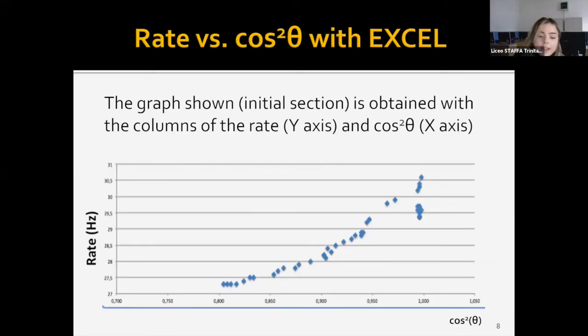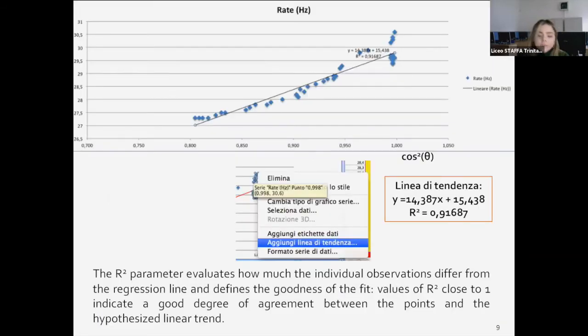In this slide, on the x-axis is represented the cos squared of theta, while on the y-axis is represented the rate of muon flux as a function of the zenith angle. In order to better highlight the points of the graph, we have narrowed the field of action in the scale of the representation of the two measures. In order to make the representation of this graph, we have used a trend line. The first step is to position the cursor on one of the points on the graph, and with the right mouse button select the item add trend line. So once we have obtained the trend line, we have its equation and R-squared. The assumed trend line and the values of the R-squared parameter that defines the goodness of the fit are displayed on the graph. The more the values of R-squared are close to one, the more the degree of agreement between the points and the linear trend are accurate.